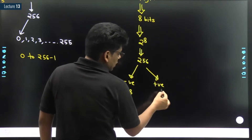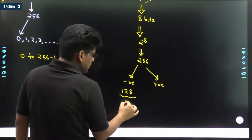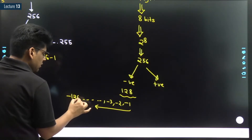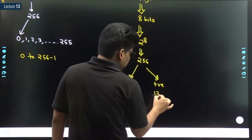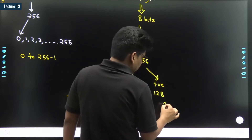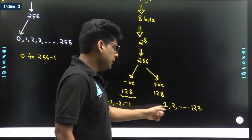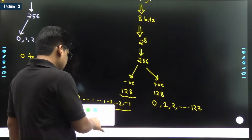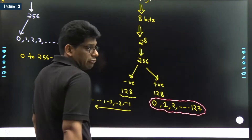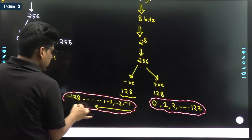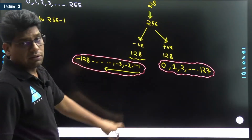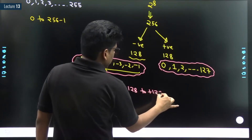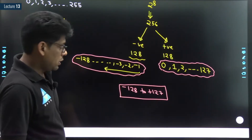Half of 256 is 128. For the negative side, we start from minus 1, minus 2, going in that direction, so the smallest number is minus 128. For the positive side, we again have 128 numbers, but counting starts from zero, so it goes from 0 to 127. Therefore the range of signed character data type is minus 128 to plus 127.